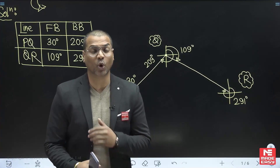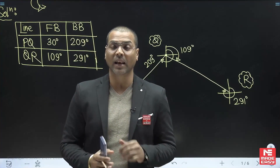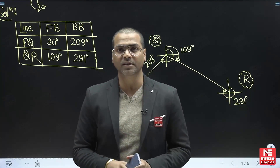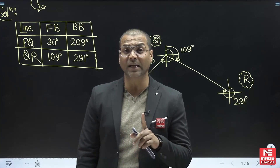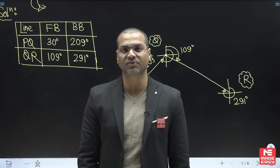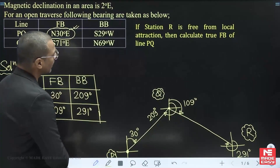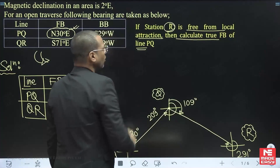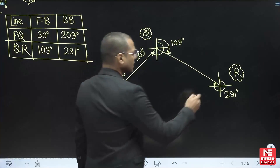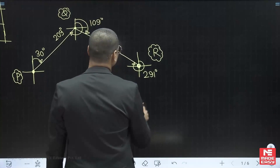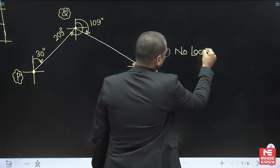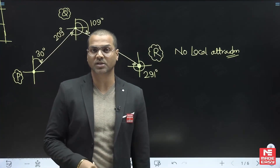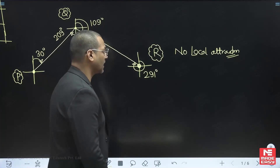Whenever you solve a local attraction problem, you check if the forebearing and back bearing difference is 180°. If it is, there is no local attraction. But in this open traverse, no line gives a 180° difference. However, the question states that station R is free from local attraction, meaning all bearings taken from station R are correct — so the value 291° has no error.